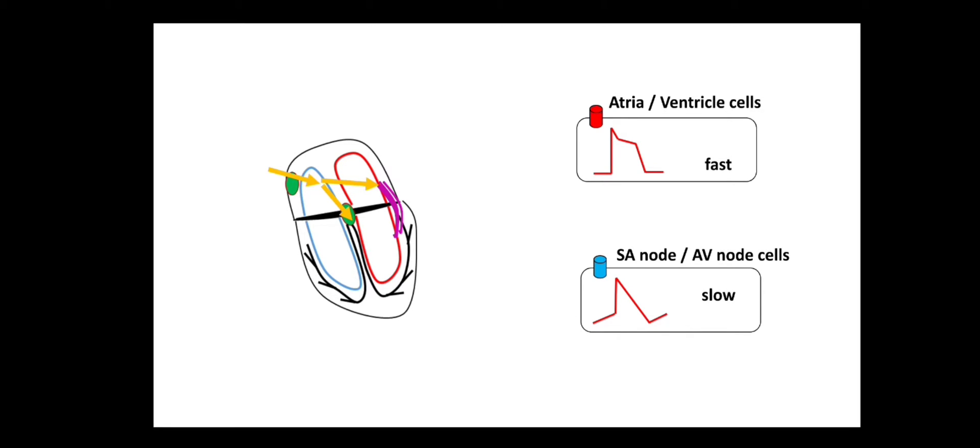Now regarding the bundle of Kent — whether it is a fast or slow conductor of impulses — it comes under the category of fast conductors. Hence, the impulse generated from the SA node can move very quickly via the bundle of Kent but very slowly via the AV node.